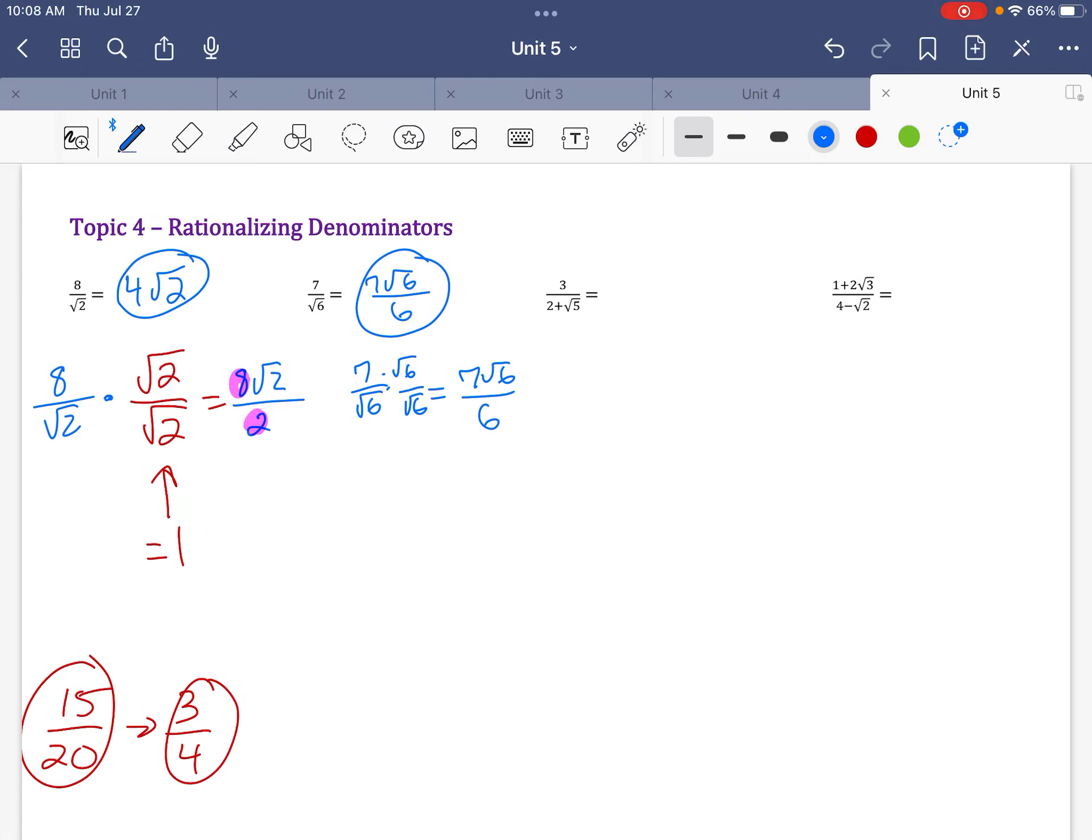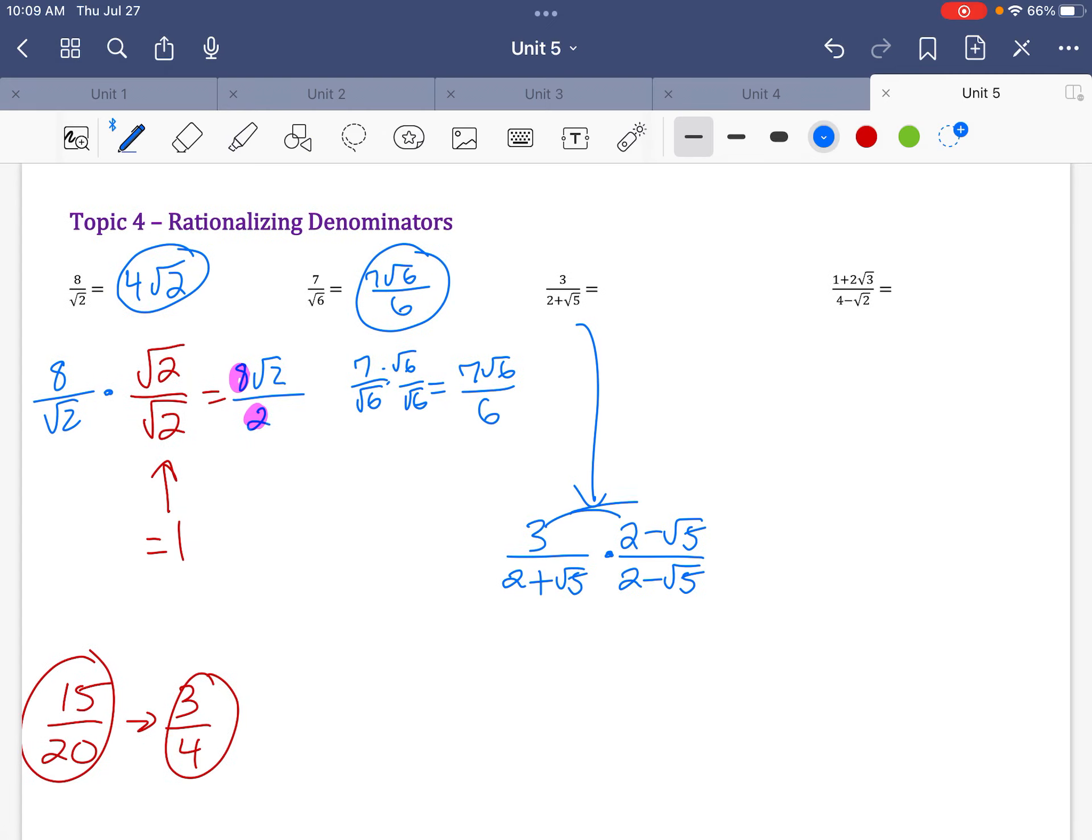All right, when you have an expression with the radical, what you do is you multiply by the conjugate. I'm going to do this down here. So I have 3 over 2 plus radical 5. So if you multiply 2 plus radical 5 by 2 minus radical 5, the conjugate, what's going to happen is you're going to see the radical disappears. So whatever I do to the bottom, do to the top.